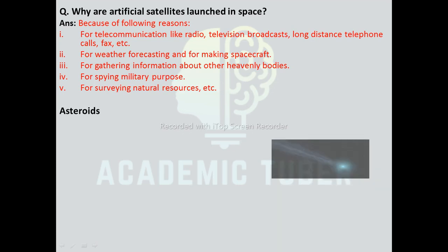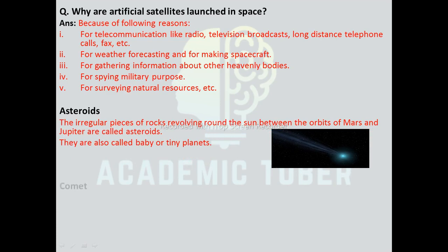Asteroids: in between the orbits of Mars and Jupiter, there are small bodies which move around the Sun, and these small bodies are called asteroids. The irregular pieces of rocks revolving around the Sun between the orbits of Mars and Jupiter are called asteroids, also known as baby or tiny planets. Most asteroids have an irregular shape, while the bigger ones are spherical. They are composed of rocky and metallic substances. Vesta, Eros, Ceres, and Juno are some examples. Ceres is the biggest asteroid.